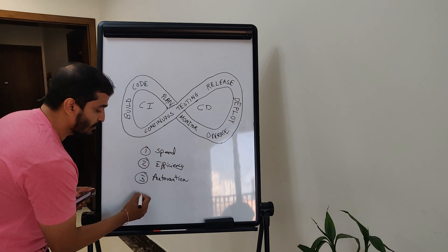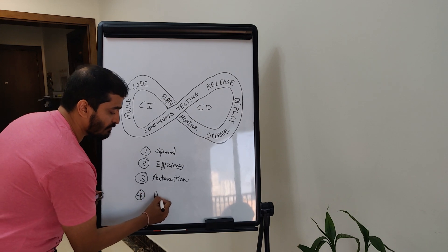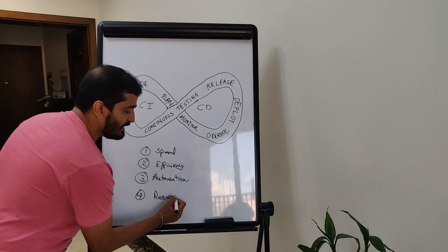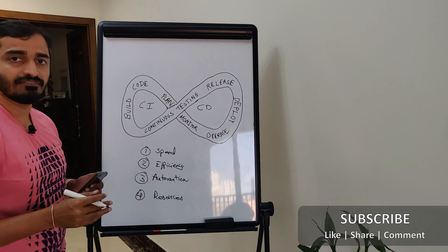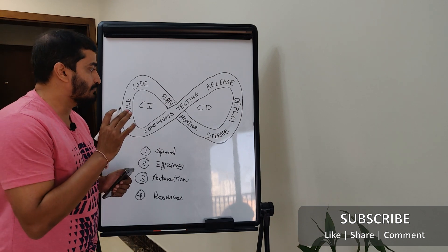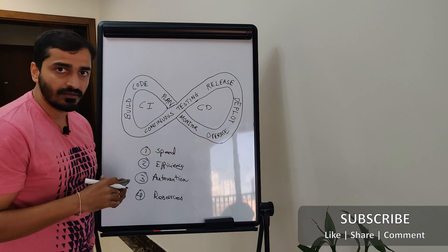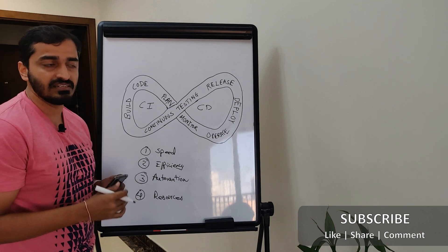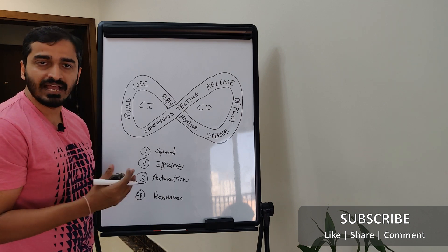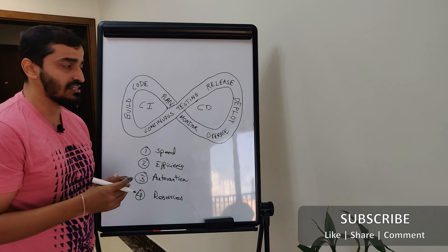So that brings us to the fourth benefit, which is essentially allocation of resources. So you don't have to look at it from the perspective of 100 developers doing this job, probably bringing in some automation can reduce that load down to 80 or maybe even 60. And that's how CI and CD helps the overall process.